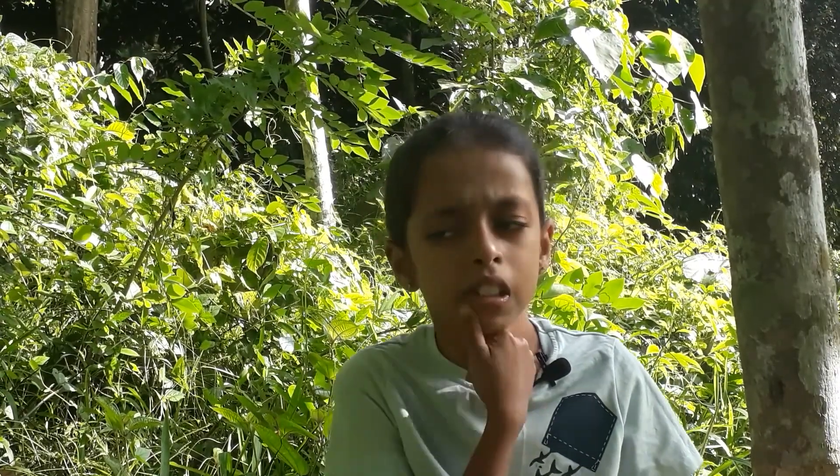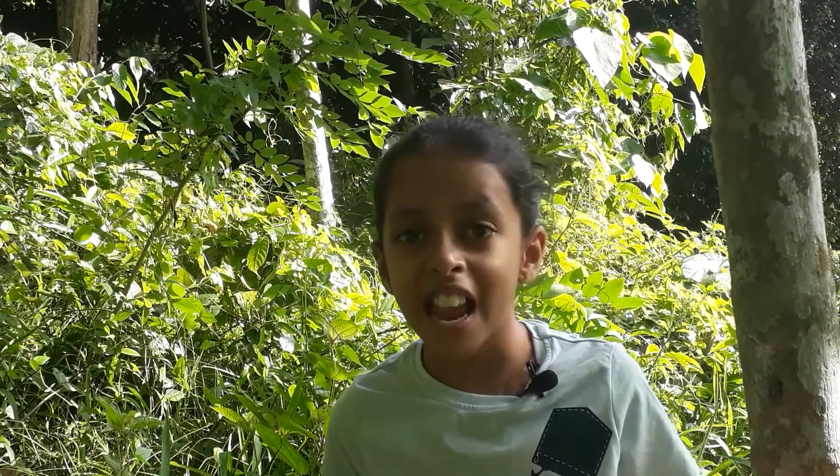Phytoplankton occur at the surface, but what about the deep oceans? Instead, there is a process called chemosynthesis, which provides a food source to zooplankton.